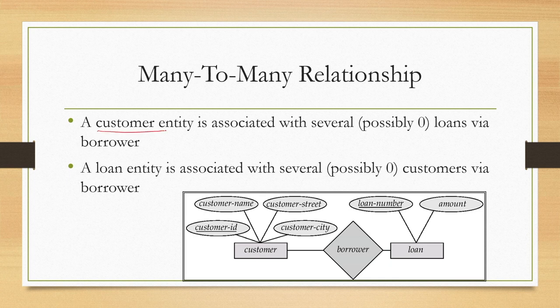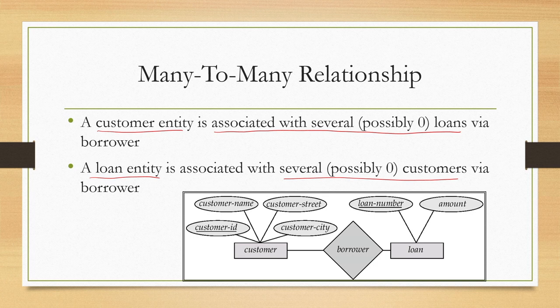Finally, many to many: a customer entity is associated with several loans and a loan entity is also associated with several customers. In 1 to 1, a customer is associated with one loan and vice versa. In 1 to many, a customer entity is associated with many loans but one loan is associated with one customer only. In many to 1, a customer is associated with one loan but one loan is associated with many customers. In many to many, both a customer can be associated with several loans and a loan can be associated with several customers — in this case the borrower relationship is many to many.